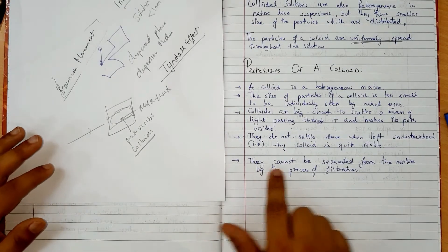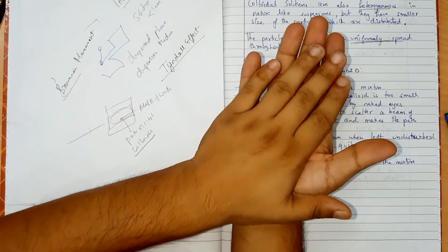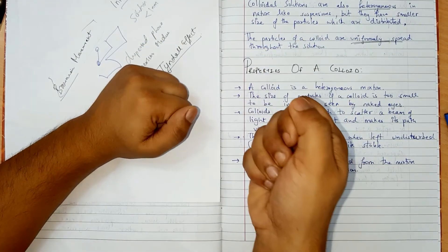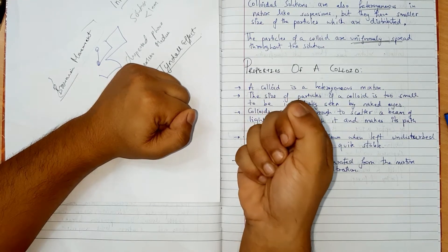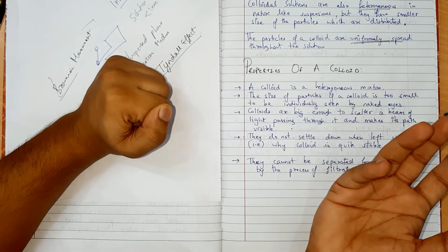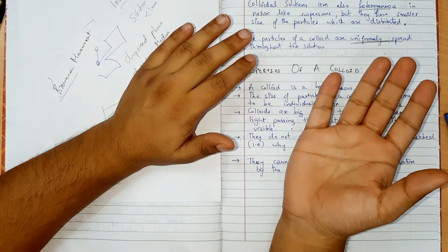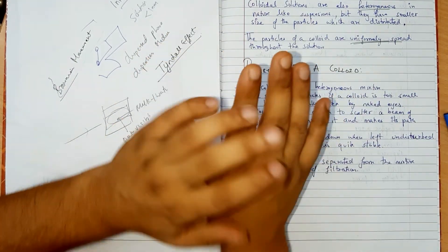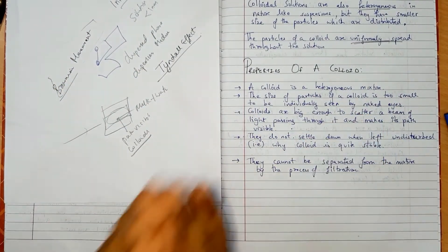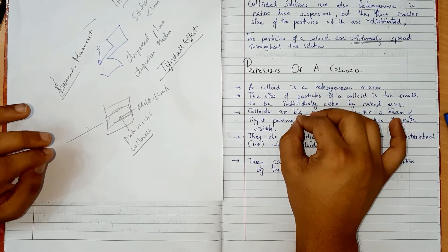See this point, they cannot be separated from the mixture by the process of filtration. For example, our blood comes. The particles of the colloids, they will not change with the help of filtration. This is why we use animal membrane, which we will discuss when we will discuss the difference between suspensions, true solution, and colloids.